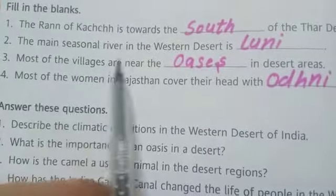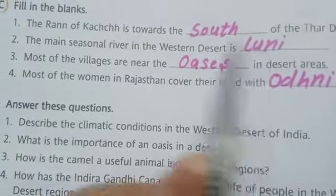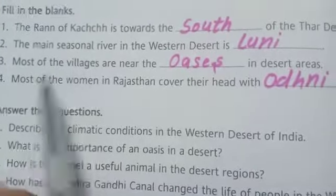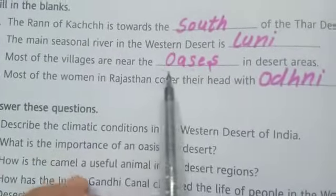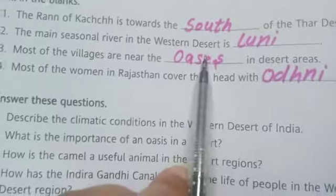The main seasonal river in the western desert is the Luni. Most of the villages are near the oases in desert areas — Oasis.